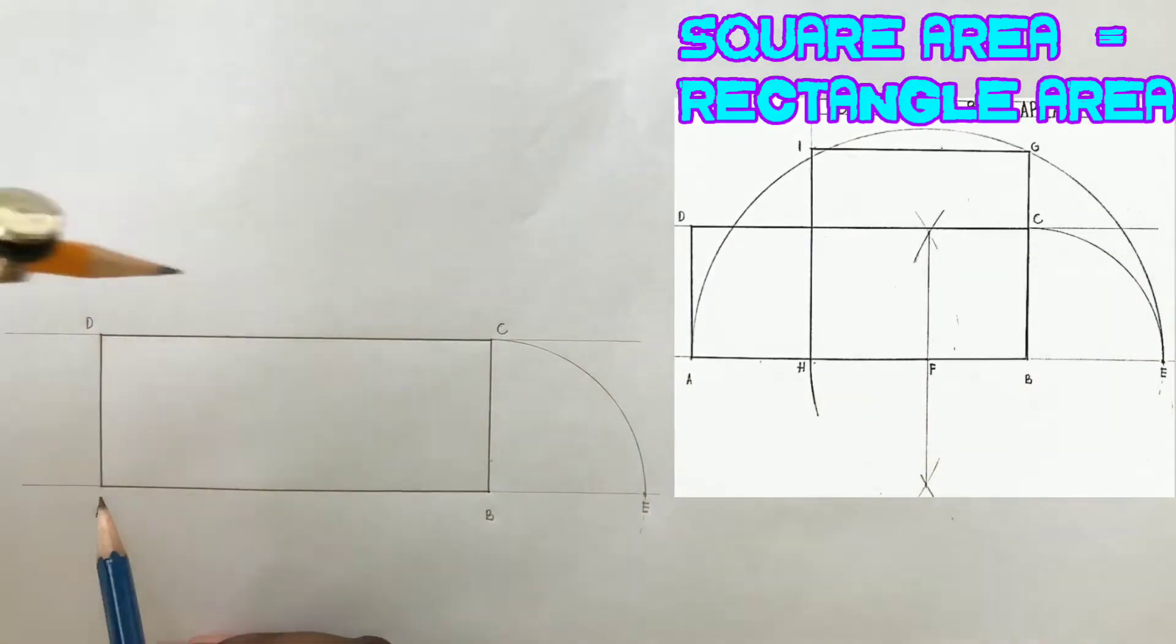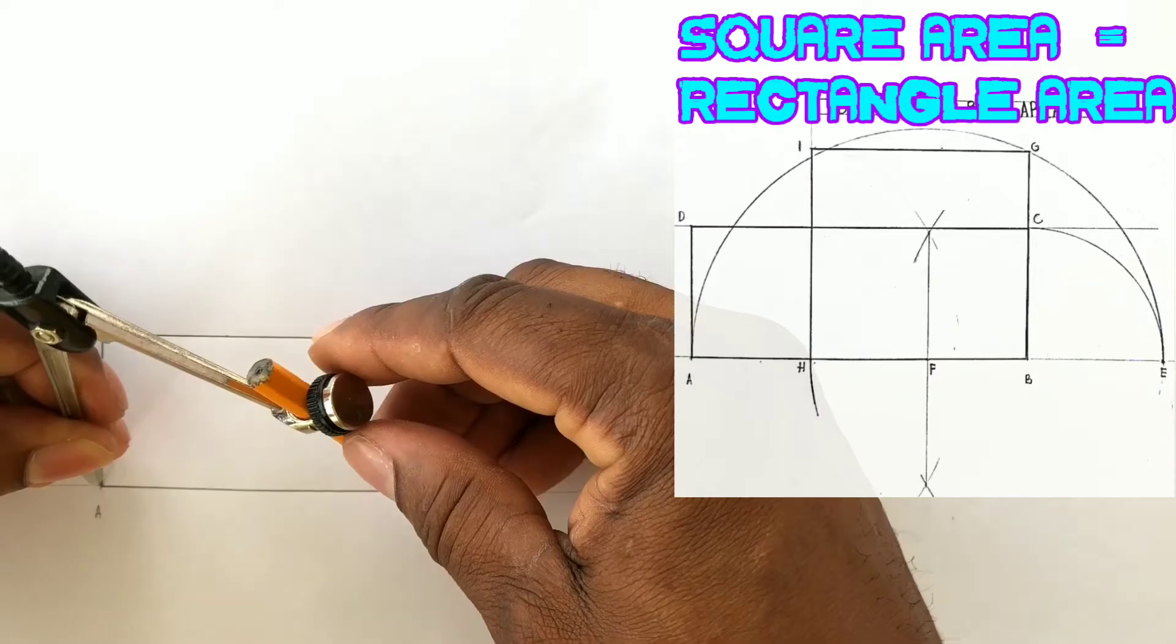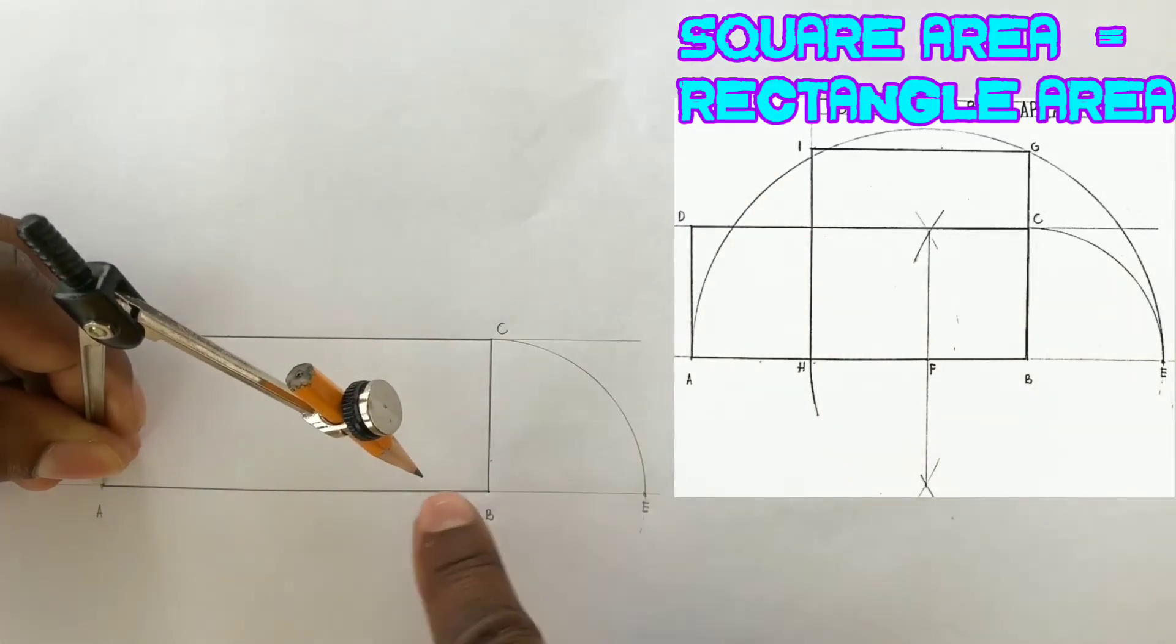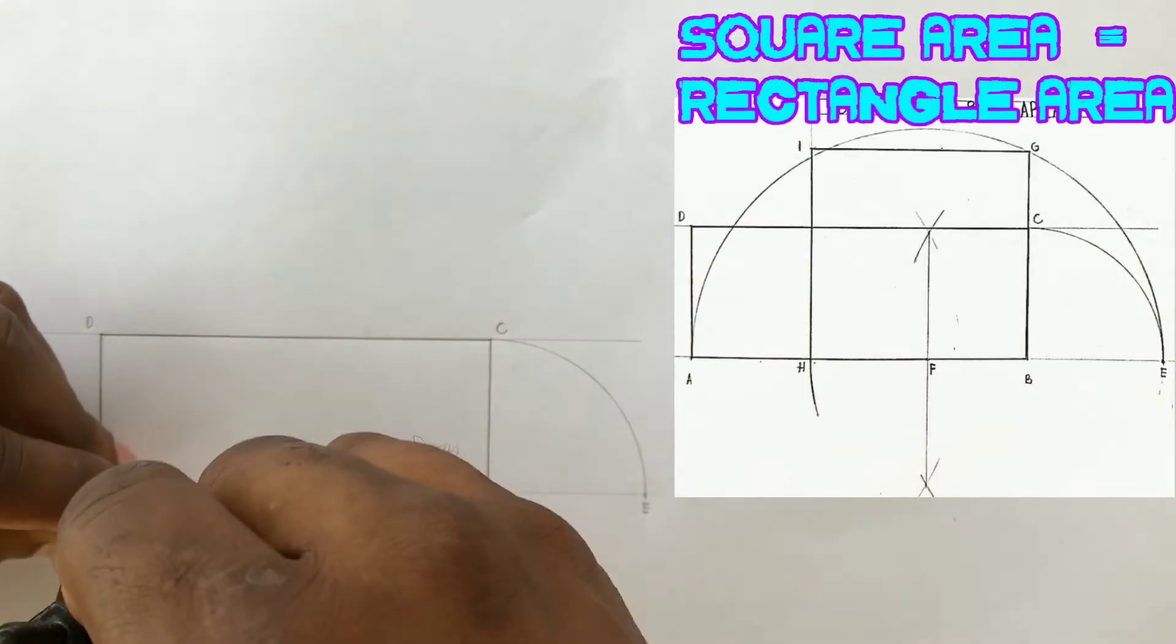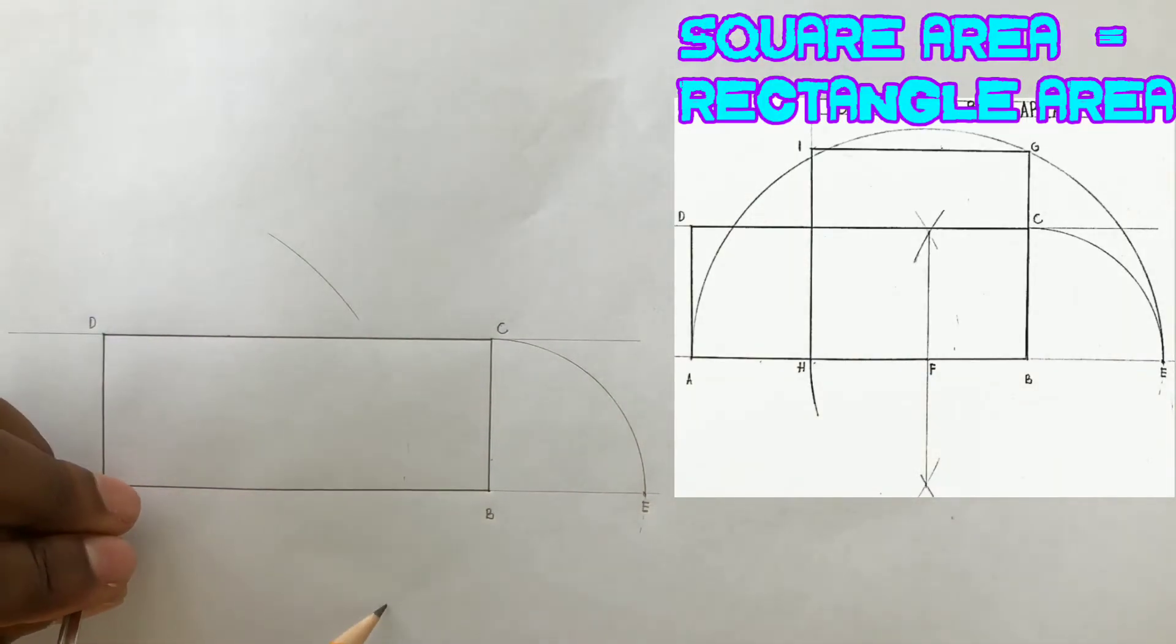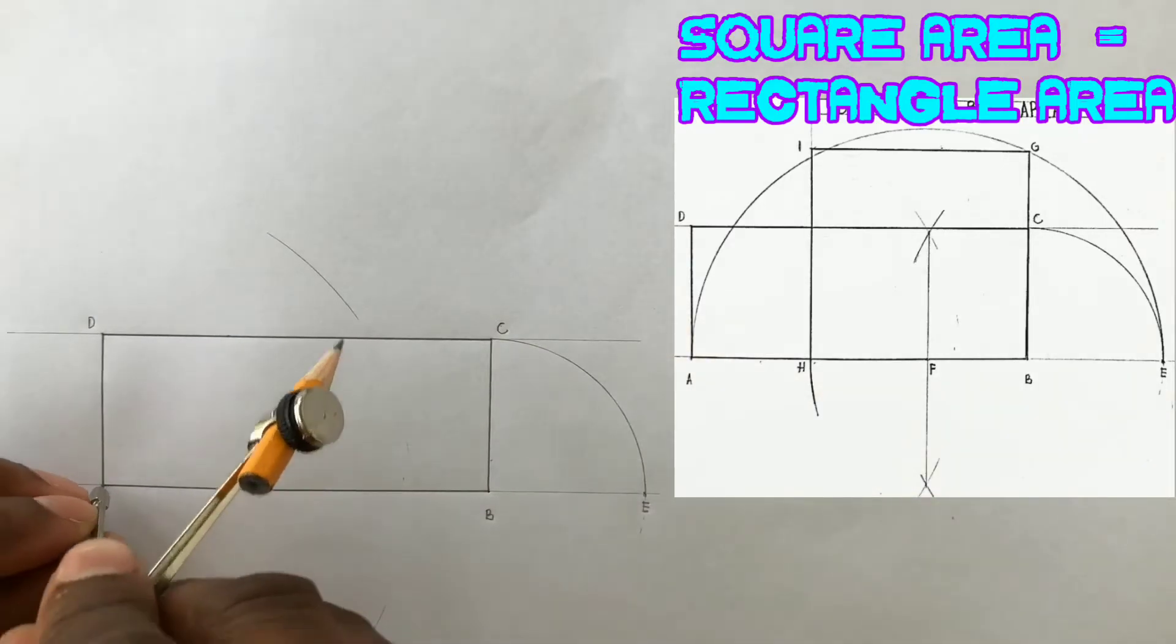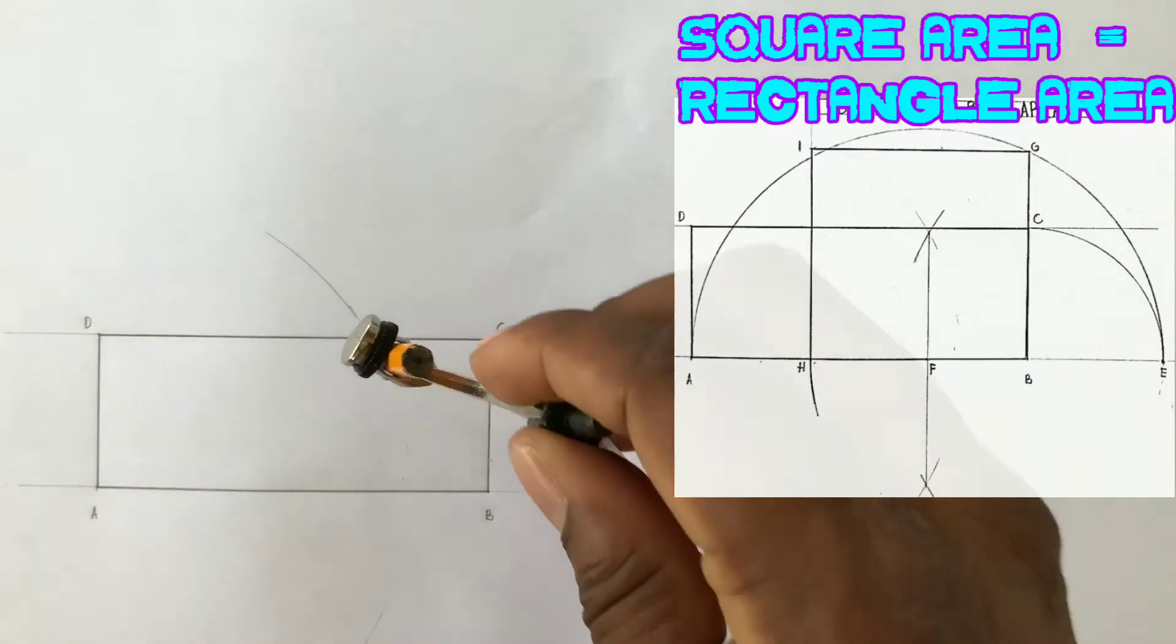We will now bisect the distance of AE. So open your compass to more than half of AE and scribe intersecting arcs above and below AE from point A and also from point E.